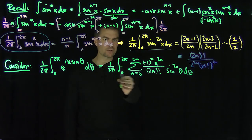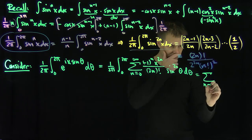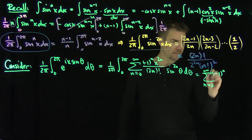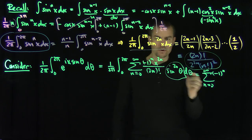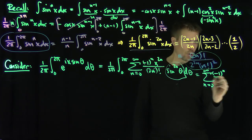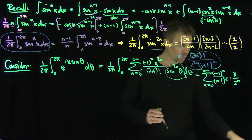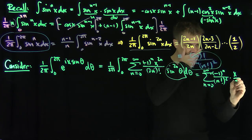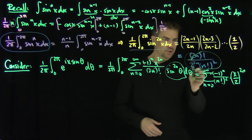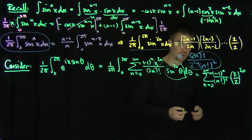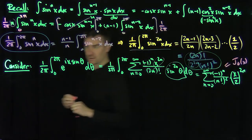I can interchange the summation and the integration, and so I get an infinite sum: the sum over n from 0 to ∞ of (−1)ⁿ times... and now I plug in the formula we derived. The (2n)! cancels, and I'm left with (−1)ⁿ over (n!)² times (x/2)²ⁿ. And we see that this is exactly J₀. So this is just J₀(x).